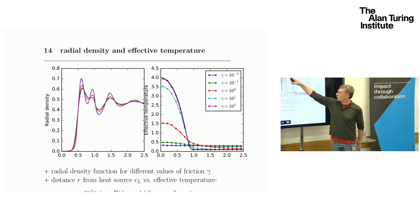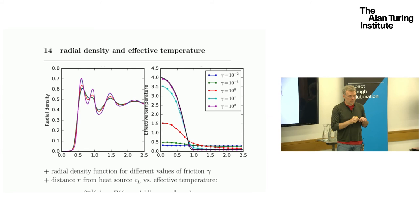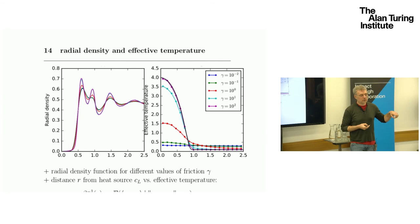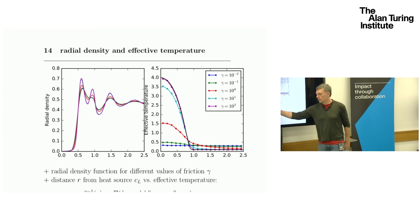We see when the friction is sufficiently strong, the density completely follows the temperature, sorry, the effective temperature, which is just what you think, the long-term average of the square of the momenta, is actually following exactly the prescription of the heat source, right?